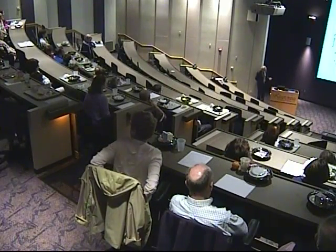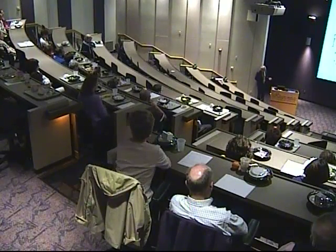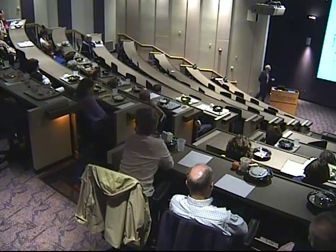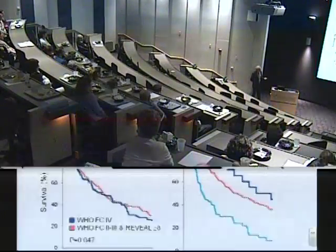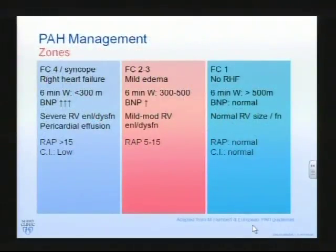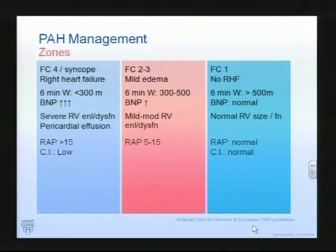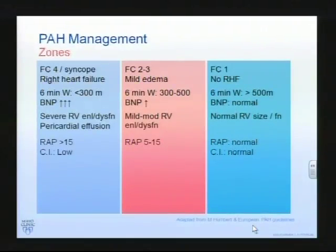Functional class with a REVEAL score of greater than 8 does give us some hope that we will be able to better separate out the more severe patients. Functional class 4, six-minute walks - we suggest this is really the group you most definitely need to be considering fairly urgently for lung transplantation or heart-lung transplantation, depending on the indices.